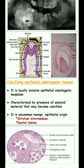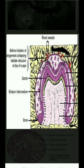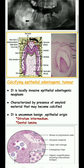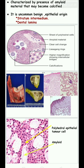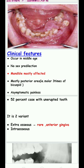There are polygonal epithelial cells arranged in cords or sheets, with amyloid deposits that later become calcified. It arises from the dental lamina and stratum intermedium.